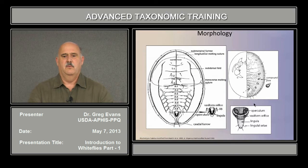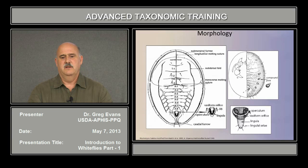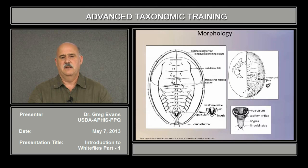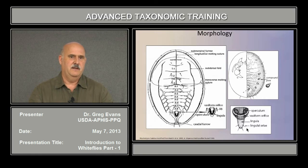Here are the compound pores in the Aleurodicinae. Here's a close-up of the vasiform orifice, which is this orifice or hole-like structure. Inside the orifice is the operculum, a plate-like structure, and underneath the operculum is the lingula. Sometimes it's exposed such as this; sometimes it's included within the orifice itself and doesn't extend past the posterior margin. The number of setae at the apex of the lingula is important — whether there are two pairs here helps define the subfamily Aleurodicinae versus two pairs in Aleyrodinae.